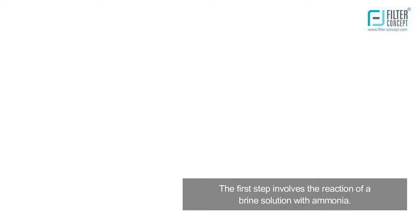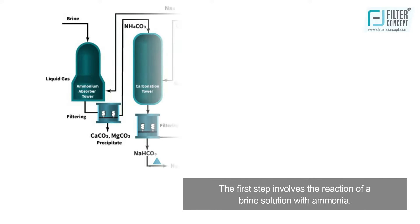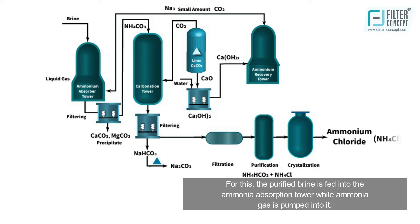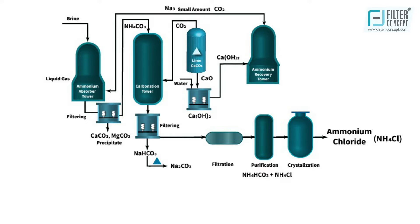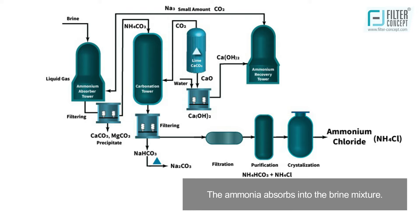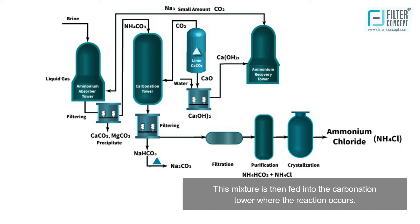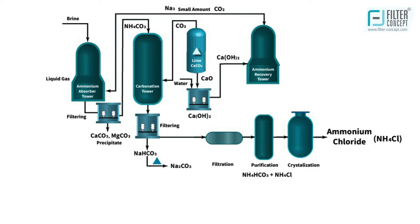The first step involves the reaction of a brine solution with ammonia. The purified brine is fed into the ammonia absorption tower while ammonia gas is pumped into it. The ammonia absorbs into the brine mixture, which is then fed into the carbonation tower where the reaction occurs.